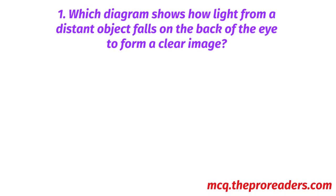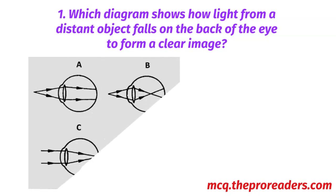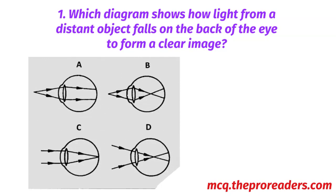Which diagram shows how light from a distant object falls on the back of the eye to form a clear image? Options A, B, C, D. Option C is the correct answer.